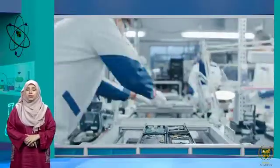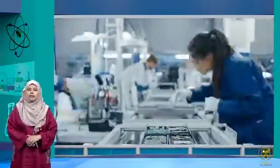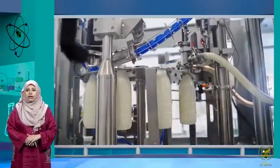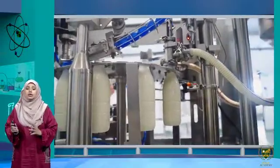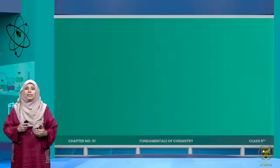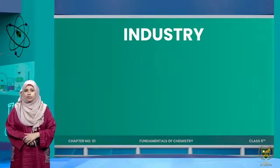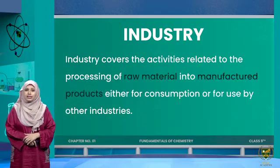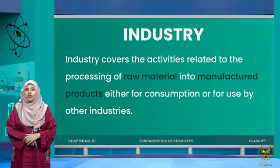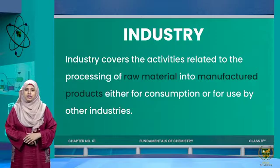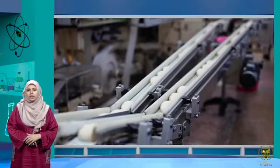To understand industrial chemistry, first we need to understand what is the meaning of the word 'industry.' Industry covers all activities in which we process raw materials to manufacture a product. Industry covers the activities related to the processing of raw materials into manufactured products, either for consumption or for use by other industries.